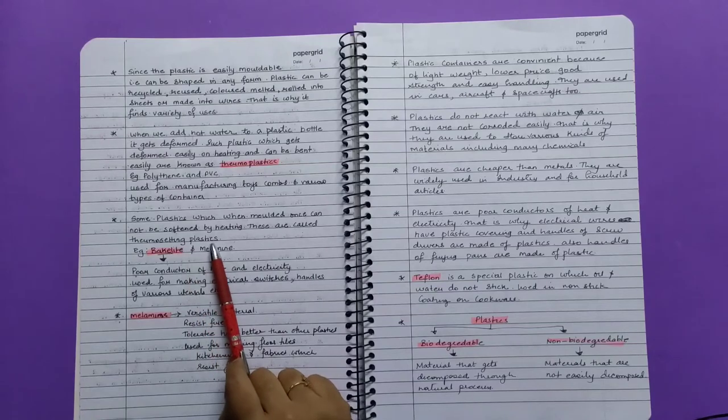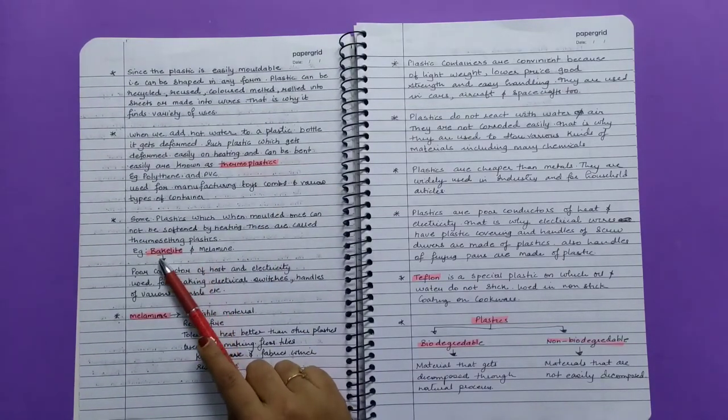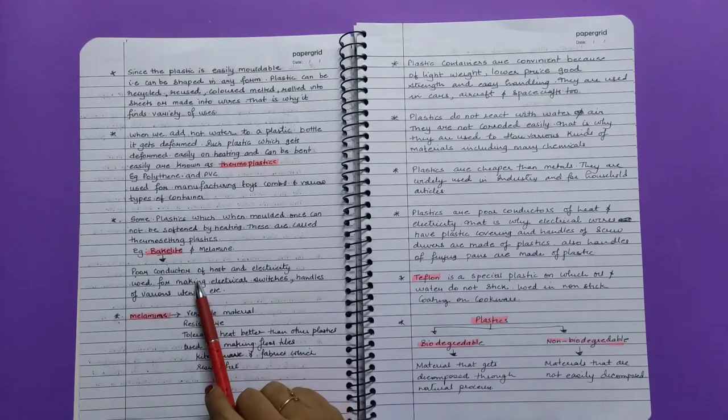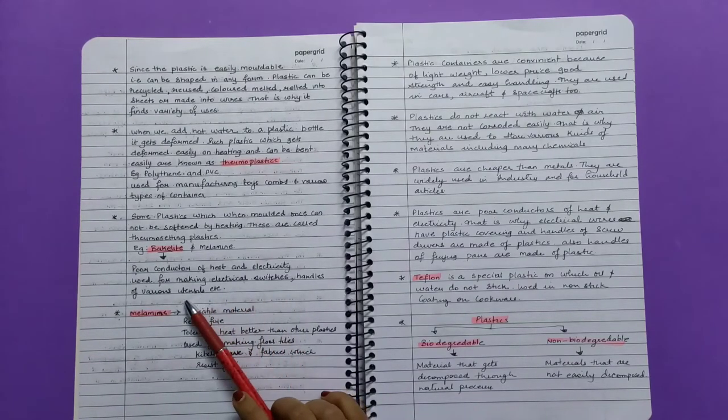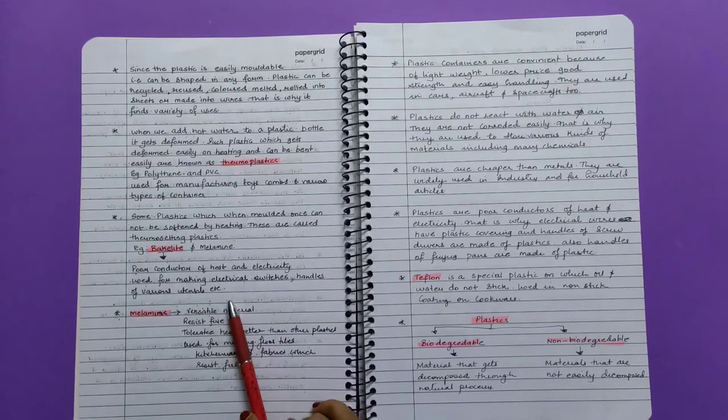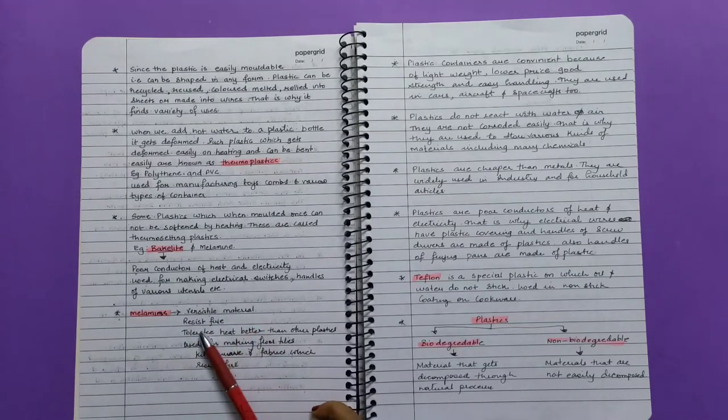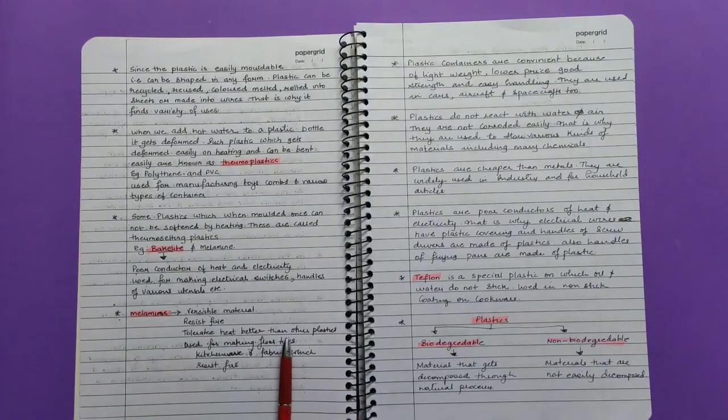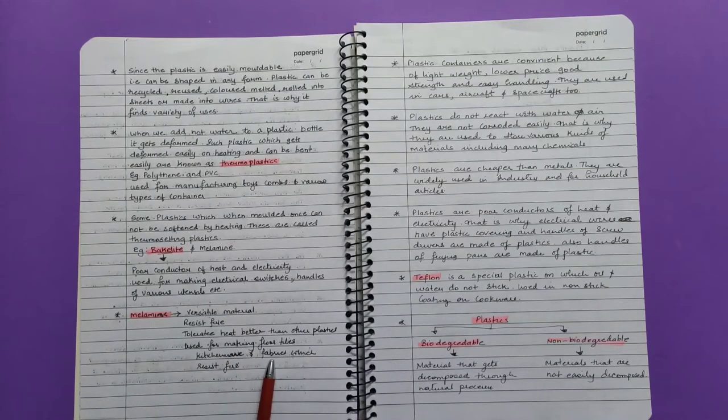Examples of thermosetting plastics are bakelite and melamine. Bakelite is a poor conductor of heat and electricity, used for making electrical handles. Melamine resists heat better than other plastics and is used for floor tiles, kitchenware, and fabric which resists fire.